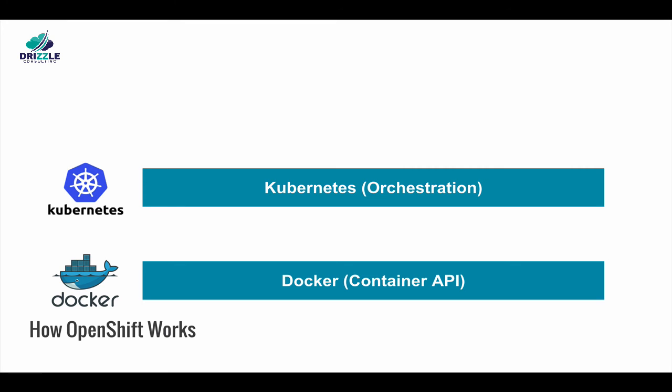Kubernetes, an open-source project created by Google, manages containerized applications across a set of containers or hosts, and provides mechanisms for deployment, maintenance, and application scaling, while Docker packages, instantiates, and runs containerized applications.